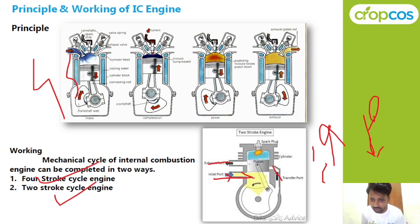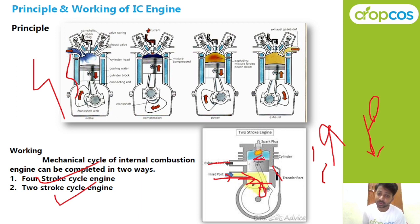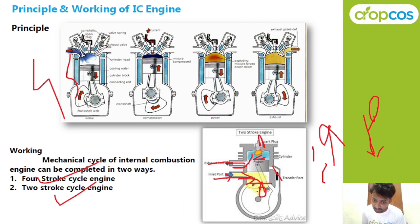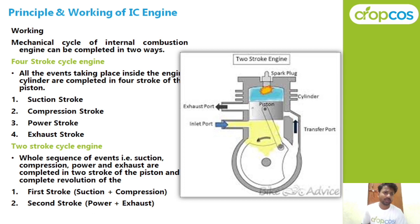In a two-stroke engine, the air-fuel mixture enters, and from BDC to TDC the piston goes up, compressing the air-fuel mixture. The spark plug fires. The working principle has two strokes: the first stroke combines suction and compression, and the second stroke combines power and exhaust.